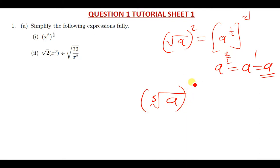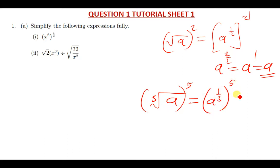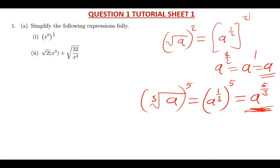And if you have the cube root of a to the power five, this is just the same as a raised to the power one over three, in brackets, raised to power five. Simplified, that gives us a to the power five over three.